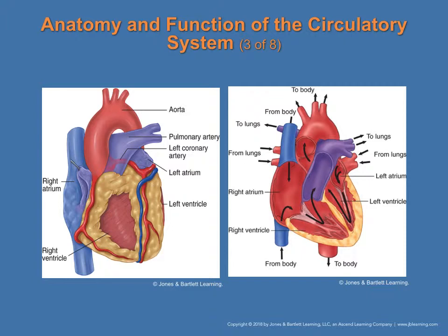We have the heart with upper chambers — the right atrium and the left atrium — and lower chambers: the right ventricle and the left ventricle. This is the pumping system of the heart: it sends blood to the lungs, receives blood from the lungs, and receives blood from the body and returns it back to the body. The valves separate the upper and lower chambers and prevent backflow into the previous chamber.